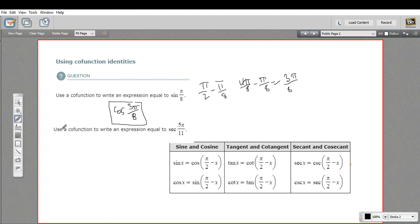Let's try another one. This one says use a co-function to write an expression equal to secant of 5 pi over 11. The co-function of the secant is the co-secant. The co-function of tangent is co-tangent and vice versa. But with the secant, we're looking at the co-secant. The process here is the same, though.